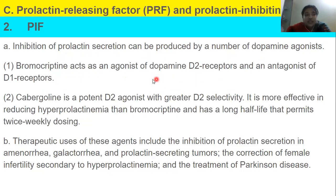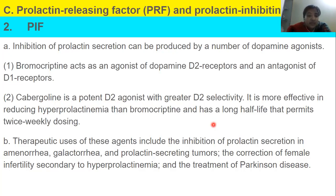Bromocriptine acts as an agonist of D2 receptors and an antagonist of D1 receptors. Cabergoline is a potent D2 agonist with greater D2 selectivity; it is more effective in reducing hyperprolactinemia than bromocriptine and has a half-life that permits twice-weekly dosing. Therapeutic uses of these agents include inhibition of prolactin secretion, amenorrhea, galactorrhea, prolactin-secreting tumors, correction of female infertility secondary to hyperprolactinemia, and treatment of Parkinson's disease.